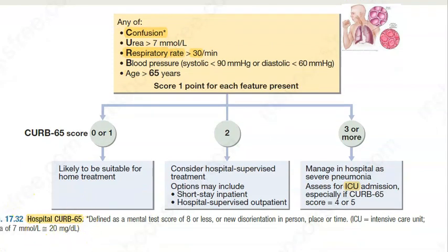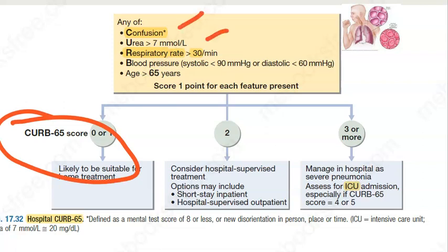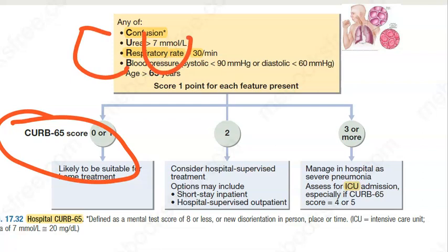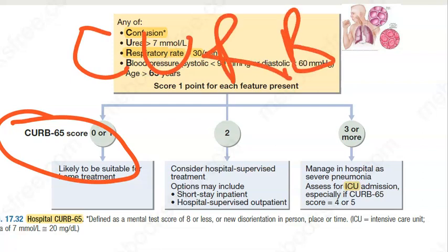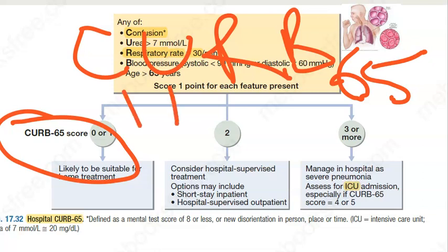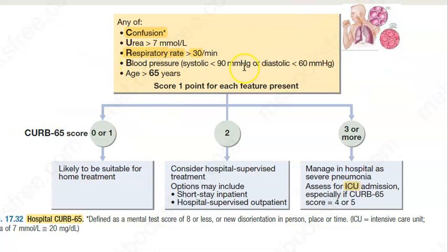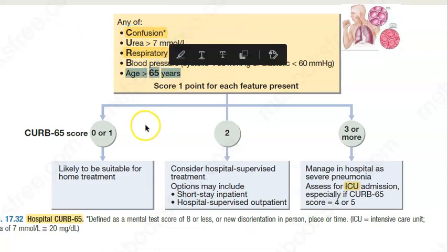There is something called the CURB-65 score used in hospital for community acquired pneumonia. CURB-65: C is for confusion, U is urea being elevated, R is respiratory rate being elevated, B is blood pressure being low, and 65 means age greater than 65. So confusion, elevated urea (suggesting a kidney problem), elevated respiratory rate, low blood pressure, and age over 65 — score one point for each feature.